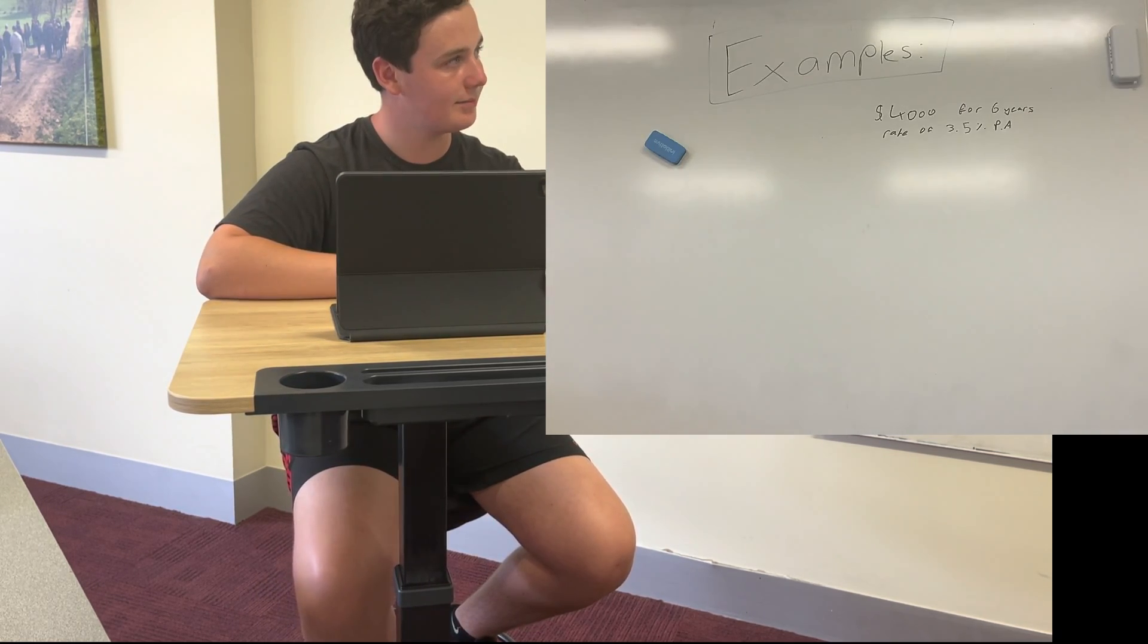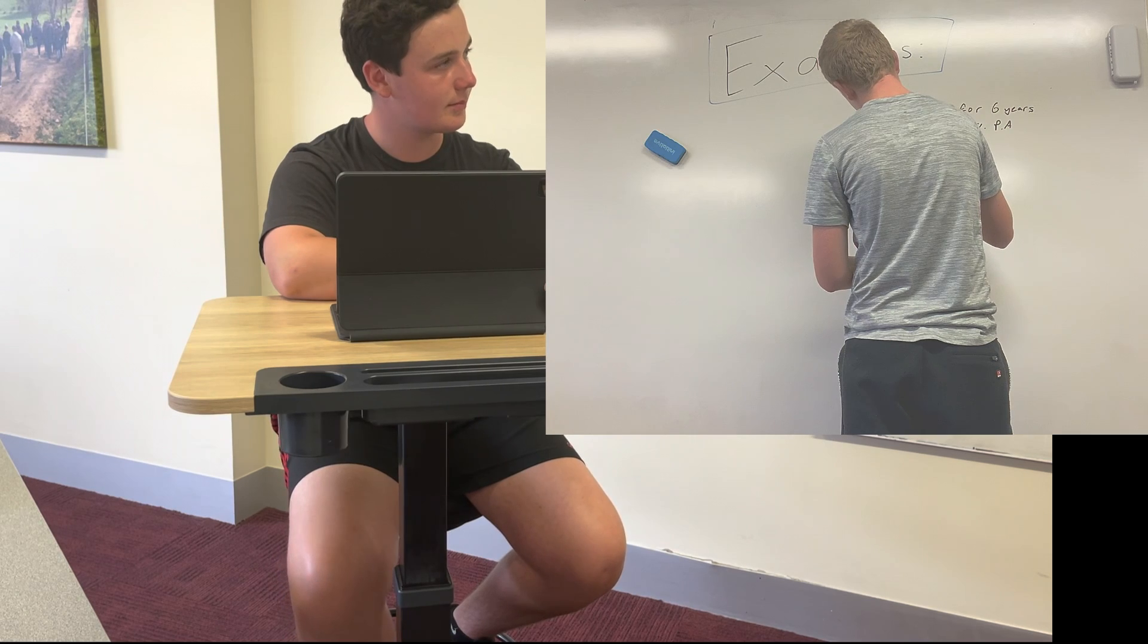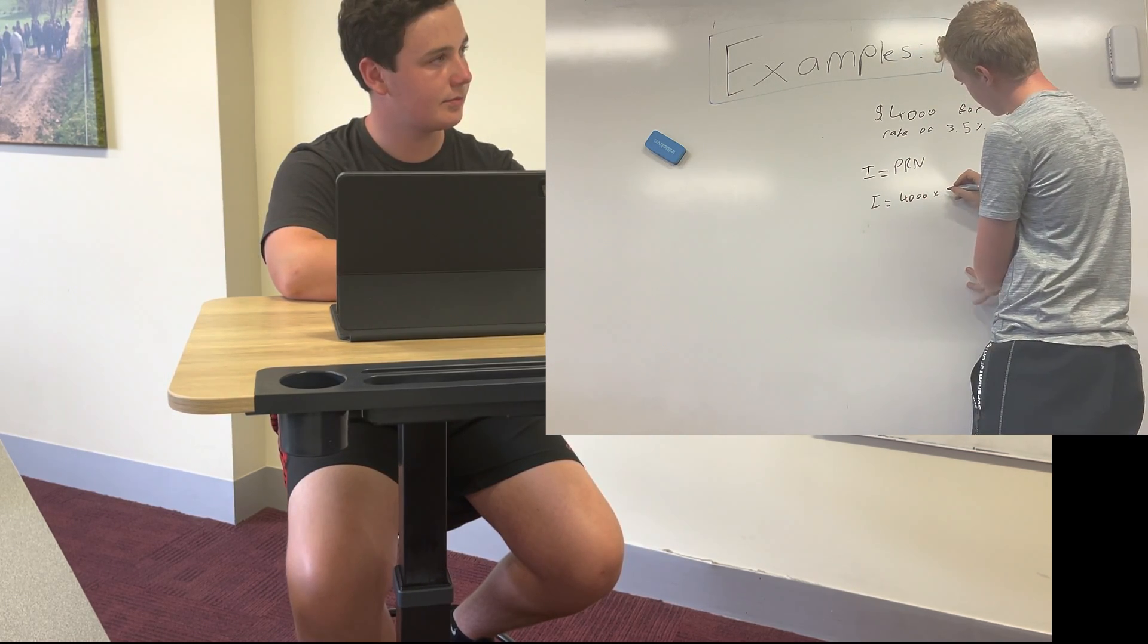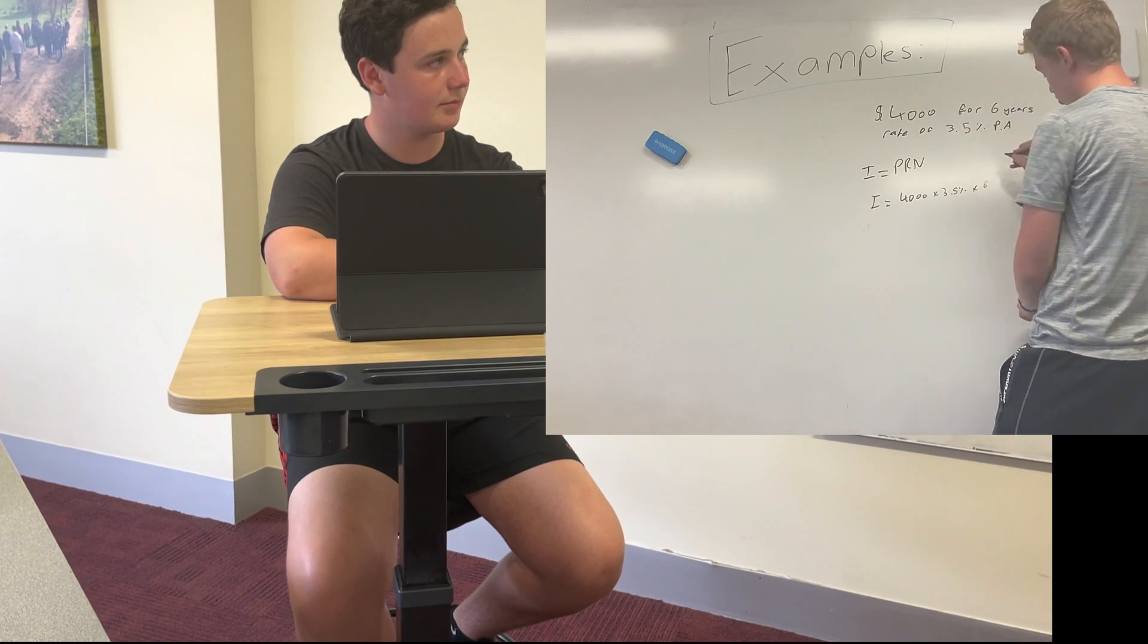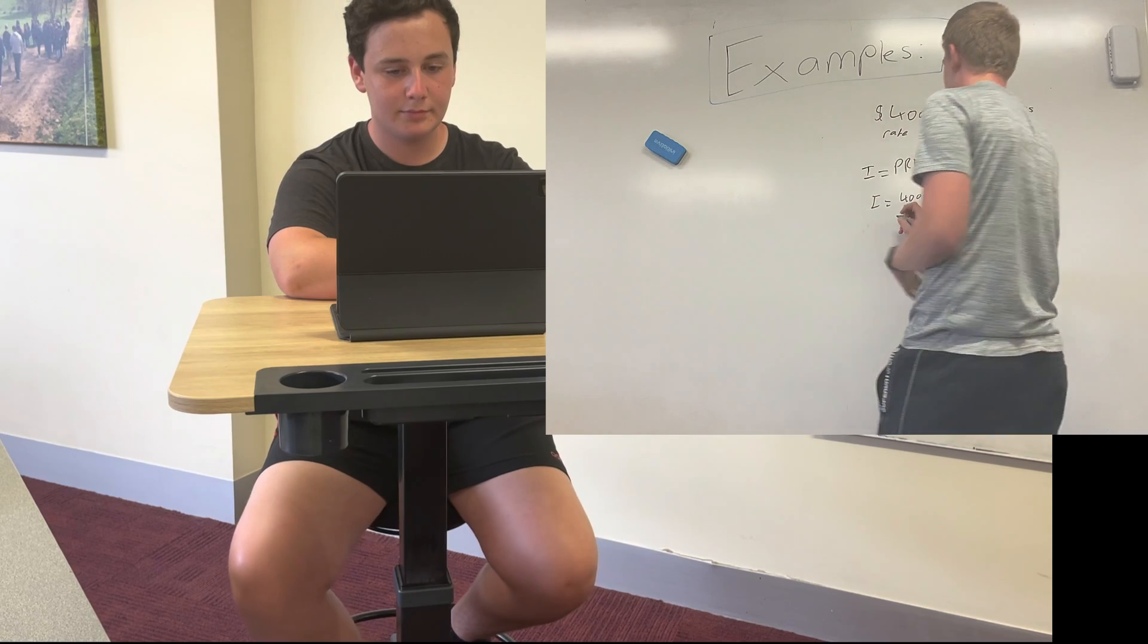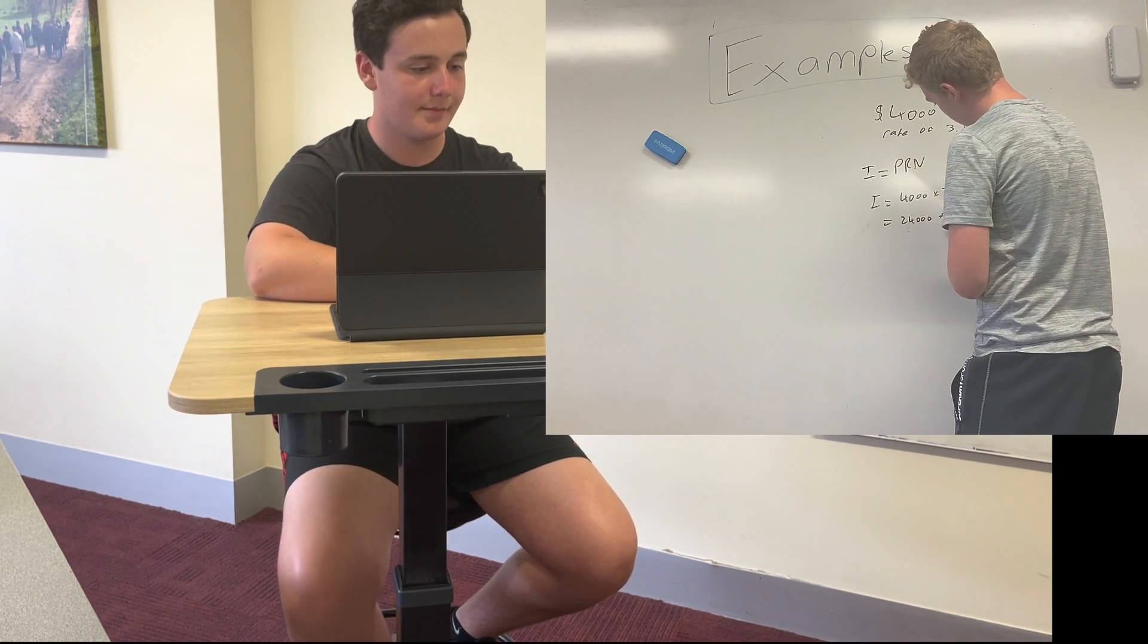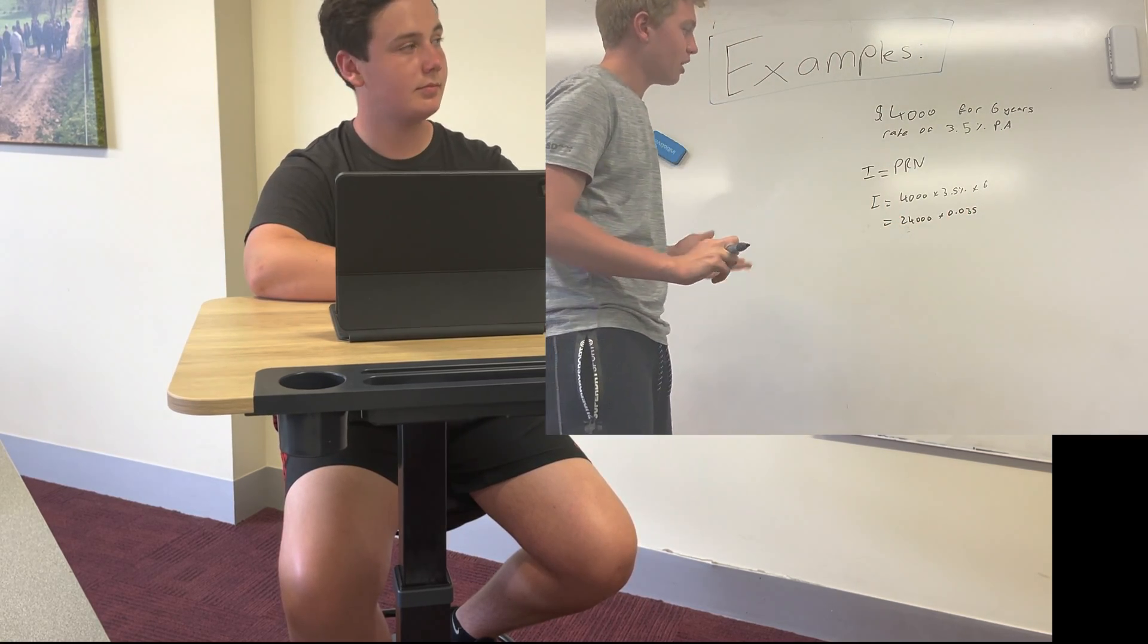But annum, there we go, look at that beautiful five. So as we can see what we're going to do here we're looking for the I. So we're going to write out the formula. We're going to do I equals PRN. There's our formula. So I is what we're looking for so we're going to keep it with I at the front. The P is $4,000, that's the principal amount, times by 3.5% times by six because the interest rate is the same. So we've got six, we've got years and per annum which again is years.